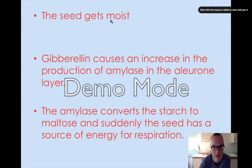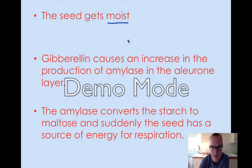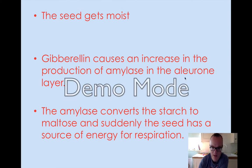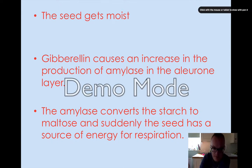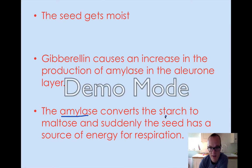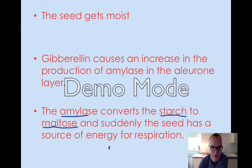We know that when a seed gets moist it will start to germinate and gibberellin will increase in the seed. What the gibberellin actually does is it increases the production of amylase, which is an enzyme in the aleurone layer. The job of the amylase is to mobilize some of the starch and break it down to produce maltose, which is then used for the initial stages of seed growth before it produces leaves to make its own energy from sunlight.